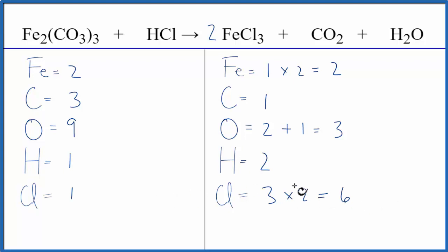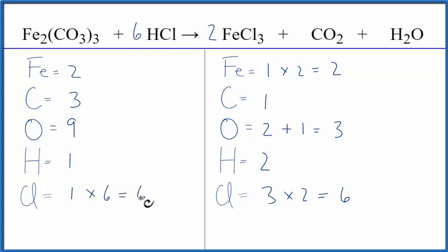Let's fix the chlorines here. We put a coefficient of six in front of the HCl. One times six balances the chlorine atoms, and then the hydrogen: one times six, so we have six hydrogens.